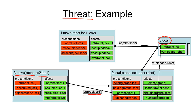Now, the problem is the following. Our first operator, the move action, has a negative effect 'at robot location one', which is exactly the condition we're trying to protect down here. This means, if we first executed action number three — move robot from location to location one — then action number one, moving the robot from location one to location two, and finally action number two, loading the container onto the robot with the crane, then this plan would not be valid. Because the second action in our totally ordered plan would destroy the protected condition that we need to execute the final action in that plan. So the final action would no longer be executable.